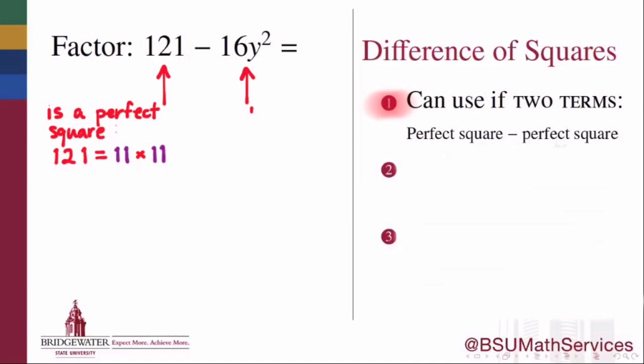Likewise, 16y squared is a perfect square because its coefficient 16 is a perfect square, 4 times 4, and its variable factor y squared is also a perfect square, being y times y. So 16y squared is, in fact, a perfect square because it's 4y times 4y.